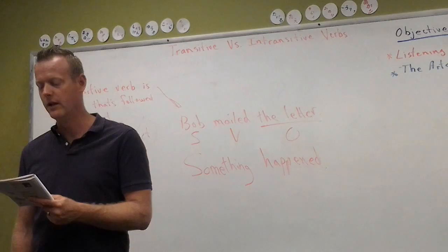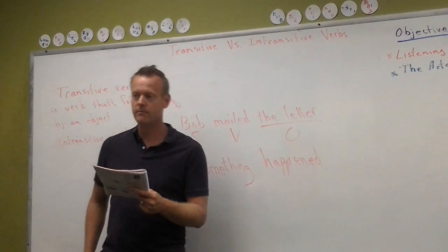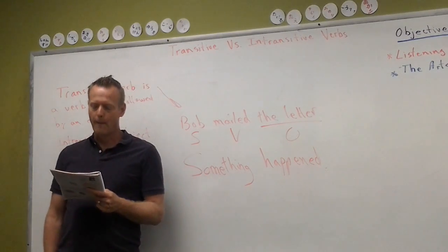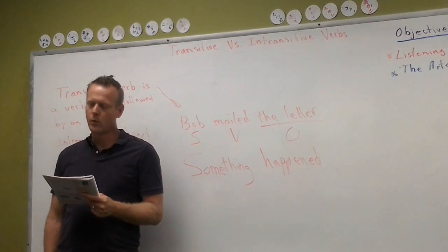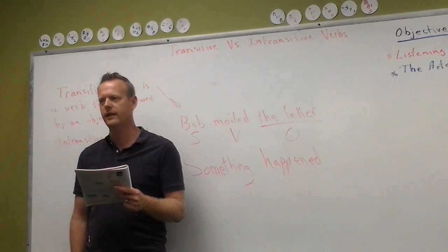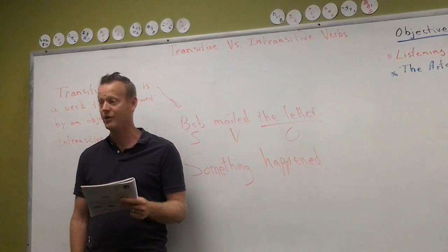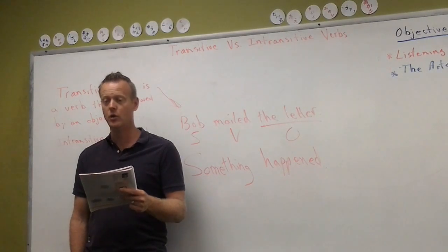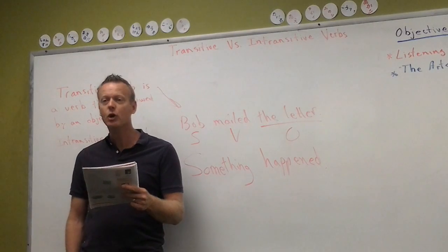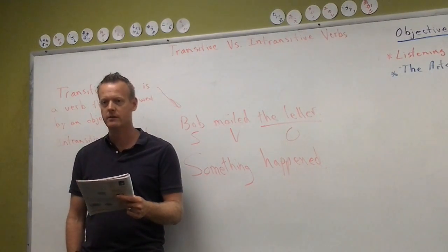So be careful — number three up top is actually intransitive. A prepositional phrase doesn't act like an object in the sentence. It's actually talking about location — 'to our house.' That's an adverbial prepositional phrase, not a noun phrase.